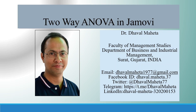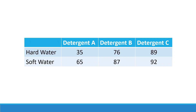Hello to all my friends. Let us discuss how to run two-way ANOVA in Jamovi. Before that, let us have conceptual clarity about what two-way ANOVA is. On your screen you can see data where the number represents the whiteness of the cloth after washing with detergent and water. A higher number indicates more whiteness in the cloth.